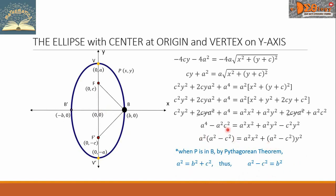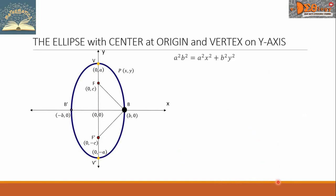In the equation, we replace a² - c² with b². So we have a²b² = a²x² + b²y². Now let us divide this equation by a²b². So we have: 1 = x²/b² + y²/a².